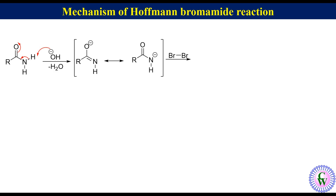Bromine is then attacked by the amide anion to produce bromide ion and N-bromoamide.